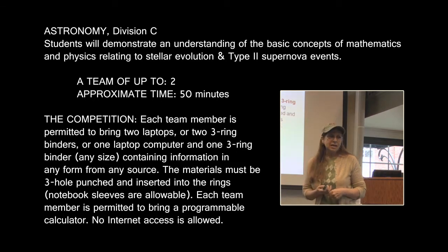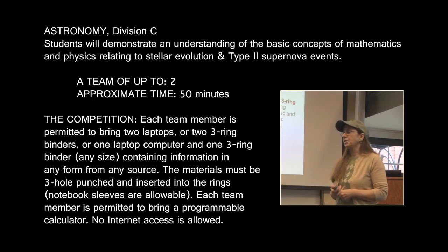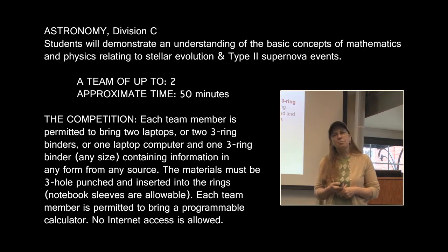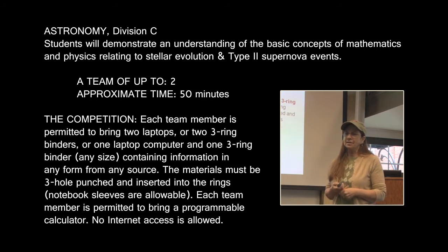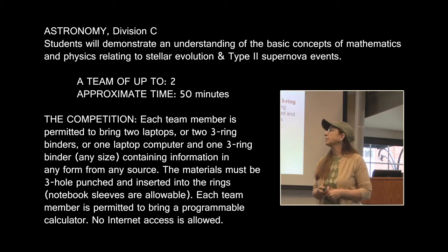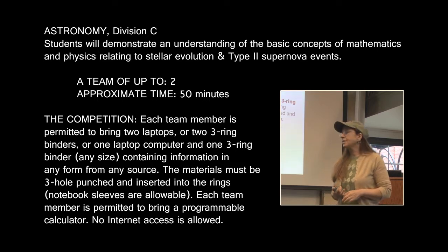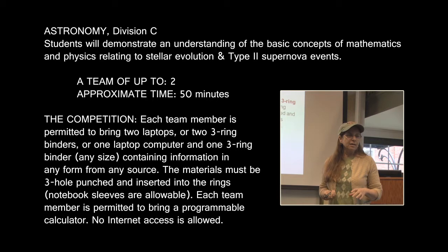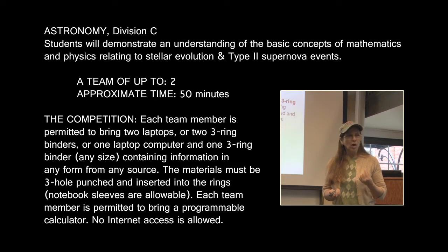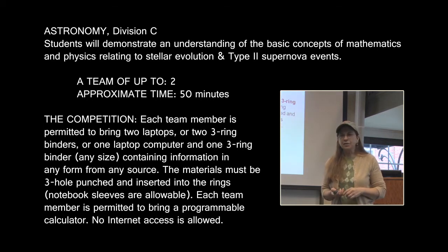The event description for Astronomy is that students need to have a basic knowledge of the physics and mathematics related to stellar evolution and Type 2 supernova events. It requires a two-person team. The event usually takes about 50 to 55 minutes, and the team can bring either two laptops, two three-ring binders, or one laptop and one three-ring binder. The material inside the binder has to be in the three-ring binder itself.